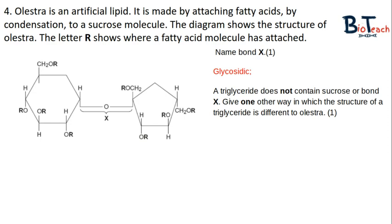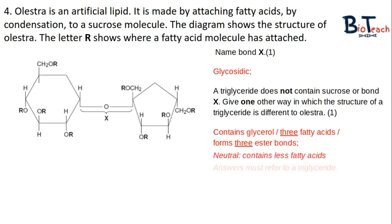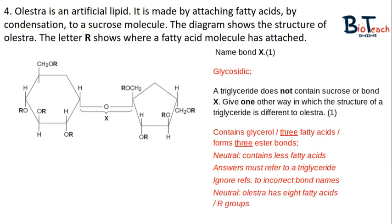The second part of the question says that the triglyceride does not contain sucrose or bond X. The question asks you to give one other way in which the structure of the triglyceride is different to olestra. This is where your knowledge of triglycerides comes in, where you'd talk about the fact that the triglyceride has a glycerol molecule and three fatty acids. You could even talk about the three ester bonds. Please ensure you give the correct name of the bond. Some students make mistakes and say that a triglyceride has three glycerol groups. Please remember that a triglyceride has three fatty acids and one glycerol group.